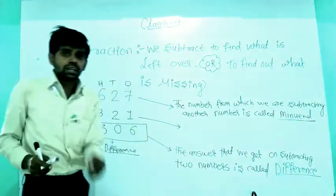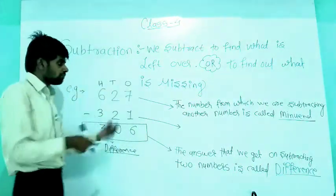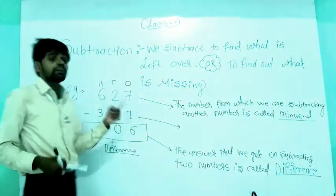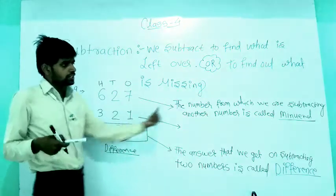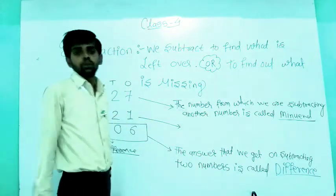There is a specific name to the biggest number. It is the big number's special name, and that is called the minuend.